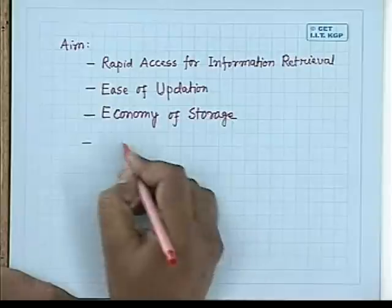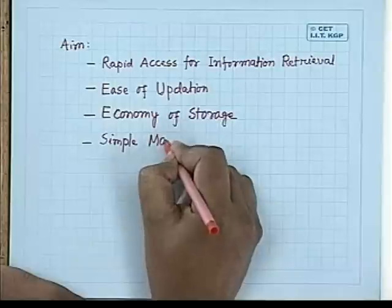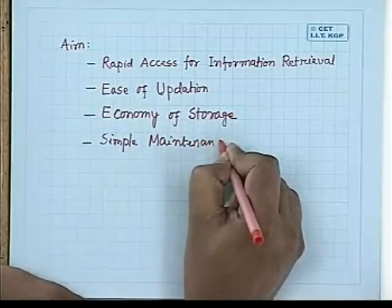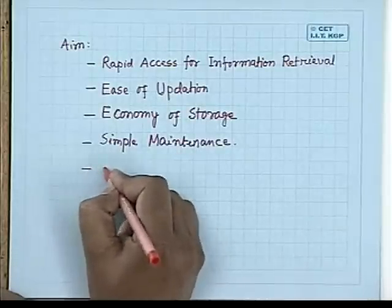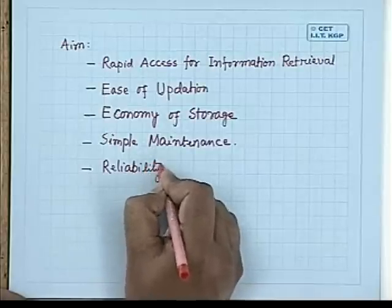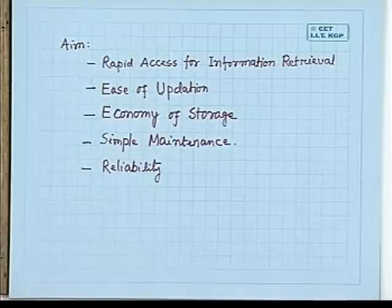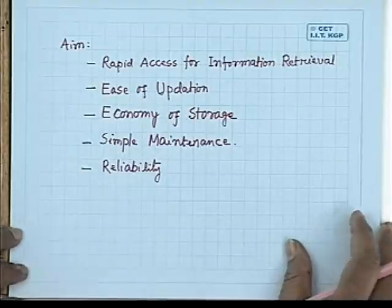Maintenance of the file system should be very simple, and the file system should be reliable. These are the objectives to keep in mind while designing any particular file system or file architecture. For different applications, some have more redundancy and some have minimum redundancy. Accordingly, different types of file structures exist, and those structures are more efficient for particular types of applications.